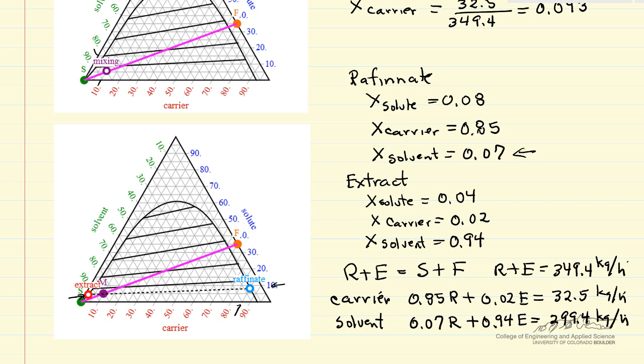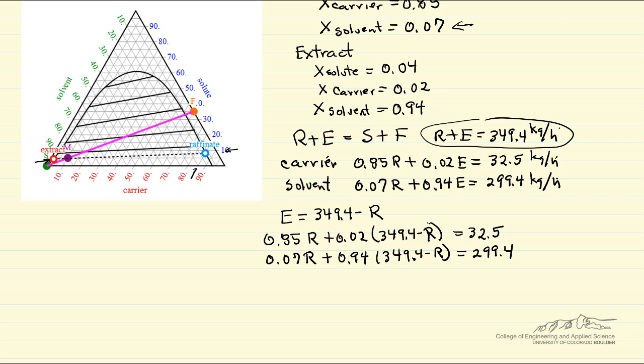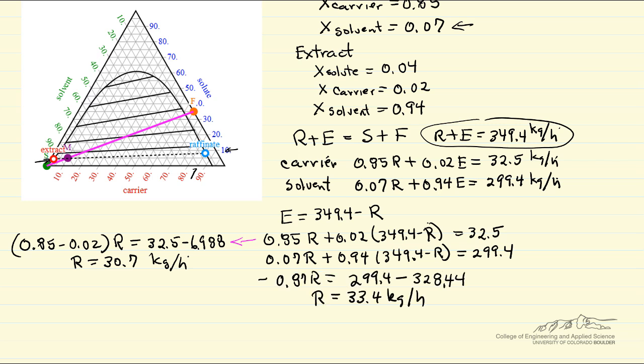So now what we need to do is solve these equations simultaneously. And so what I'm going to do is make some substitutions. So we can solve these mass balances independently for R, and so we're going to get two solutions, and they're going to differ slightly just because we made estimates. We made estimates when we read the ternary phase diagram. So the first equation gives us a value of 30.7 kilograms per hour for the raffinate flow rate.